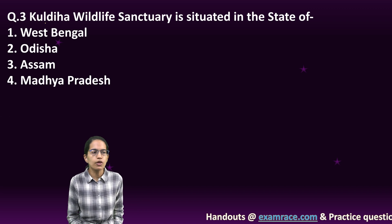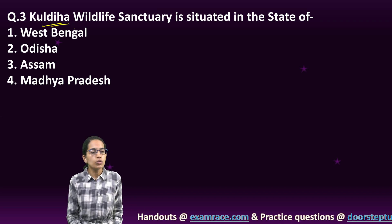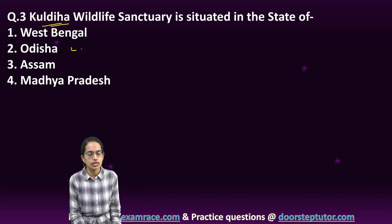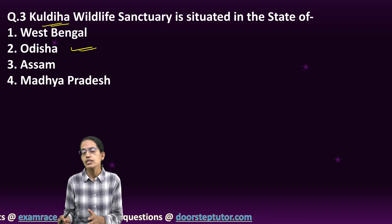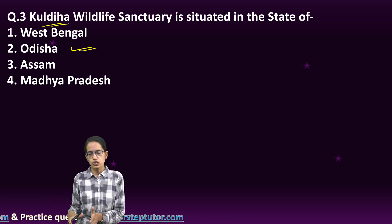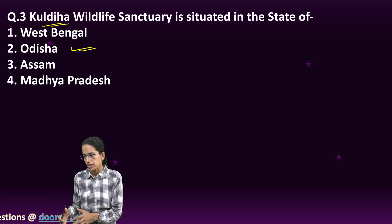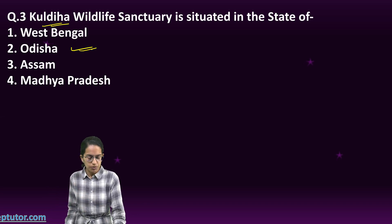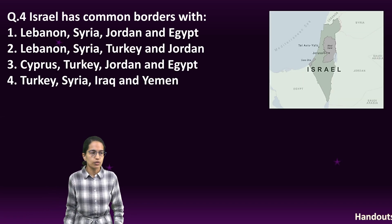From Geography of India, there was a question: Kuldiha Wildlife Sanctuary is located in Odisha. This is one of the areas among the 500 wildlife sanctuaries of India which has been protected in the region of Chhota Nagpur Plateau. Again, an important question.